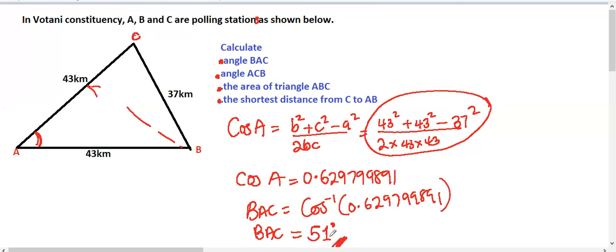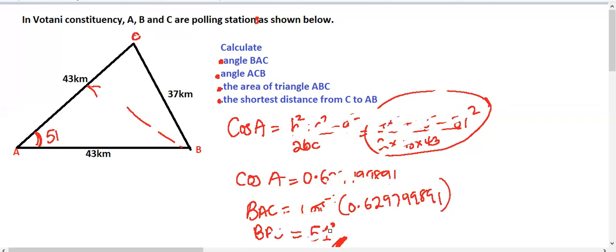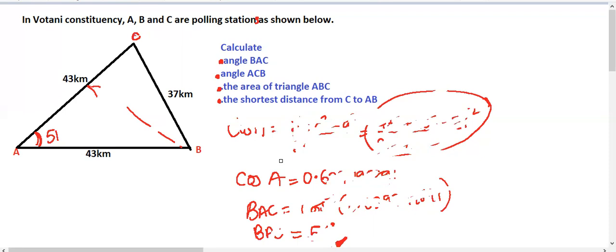So this angle BAC is 51 degrees. Take note of that — 51 degrees. Now let's look at the second part of the question.